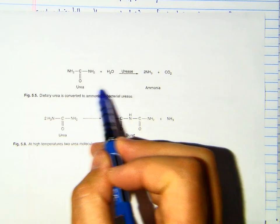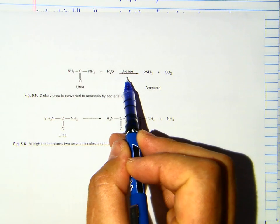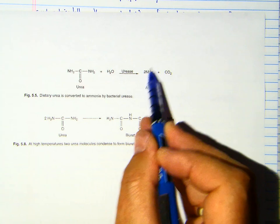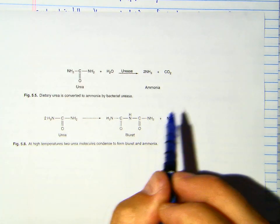If you look at figure 5.5 in the textbook, it's taking urea, adding water, adding the enzyme urease, which is of microbial origin, and you end up with two ammonias and CO2. We're going to use that ammonia to synthesize microbial protein.